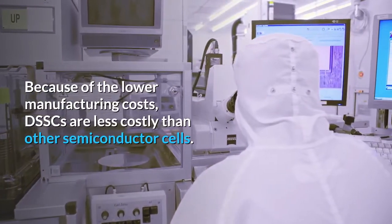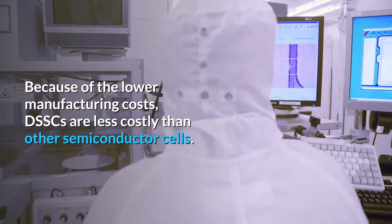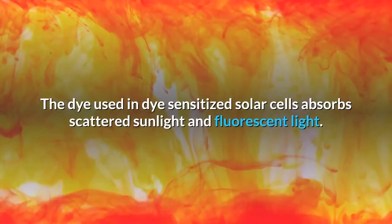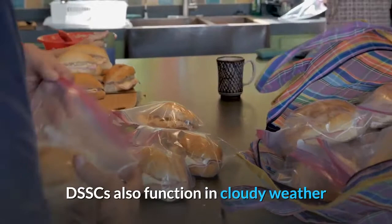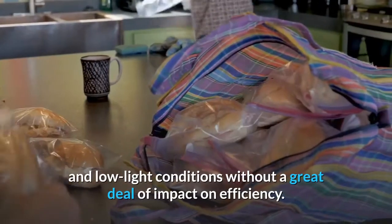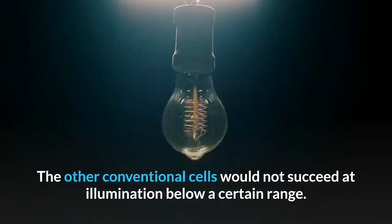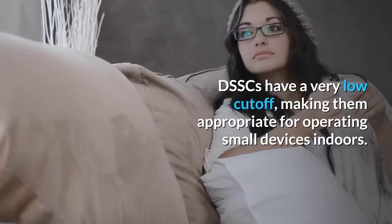The dye used in dye sensitized solar cells absorbs scattered sunlight and fluorescent light. DSSCs also function in cloudy weather and low light conditions without a great deal of impact on efficiency. Other conventional solar cells would not succeed at illumination below a certain range. DSSCs have a very low cutoff, making them appropriate for operating small devices indoors.